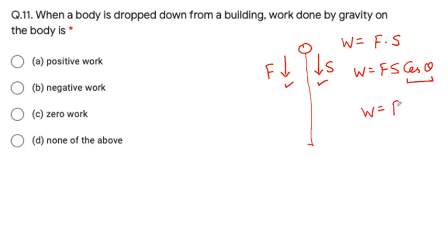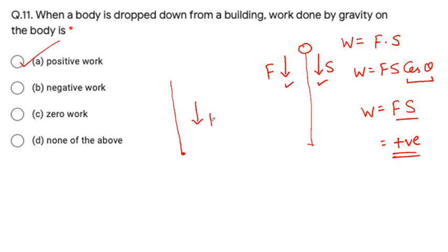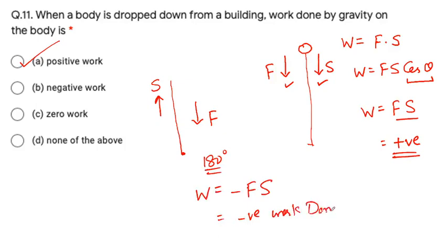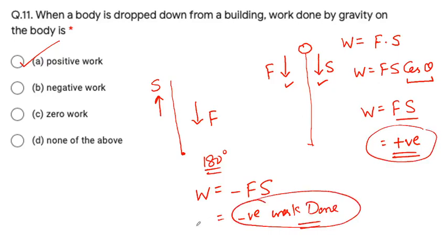The next question is: when a body is dropped down from a building, the work done by gravity on the body is what? Work done = force into displacement. The weight force acts downward and the body's displacement is also downward, so the work done is positive. The correct option is positive work done.